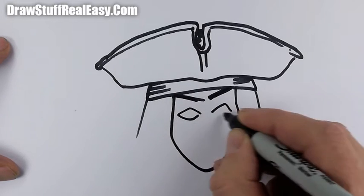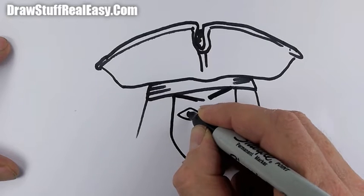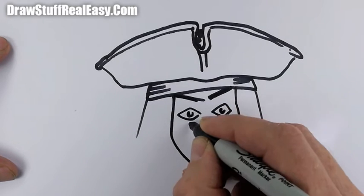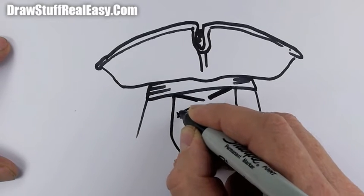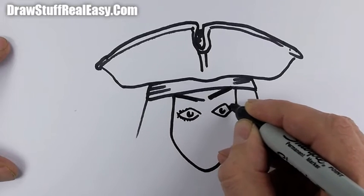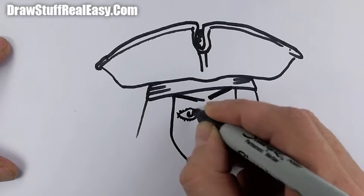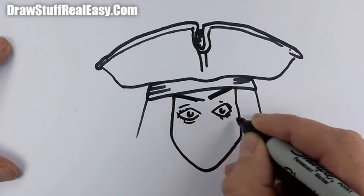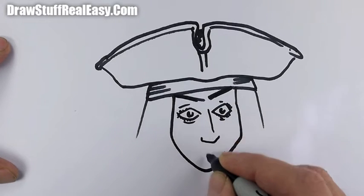Then eyes, and the eyeballs will be right in the middle there, and a little bit of hint of eyelashes like that and a bit underneath there. And then you want a nose.